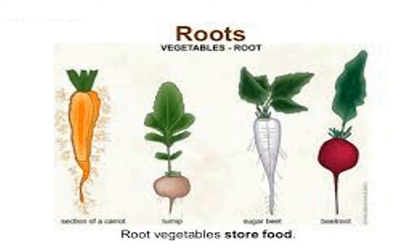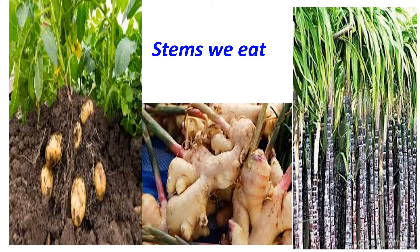Students, as you can see on the screen, the root vegetables are displayed here. It is showing that the roots of the plant store food — whatever food is made through the process in leaves, it is all stored in the roots. These root vegetables also store food in their roots. As a stem, we eat potato, ginger, and we chew sugarcane. We cannot eat their leaves or roots — we can only eat their stem.